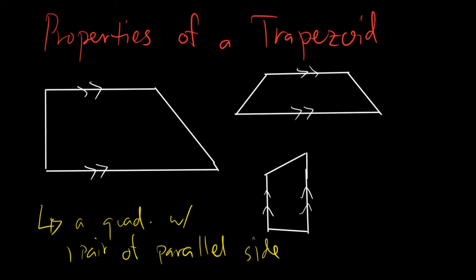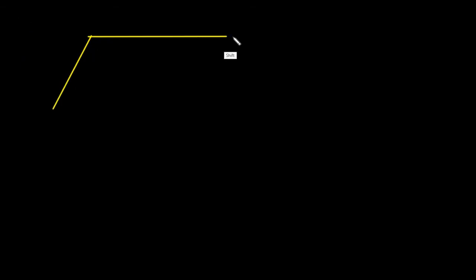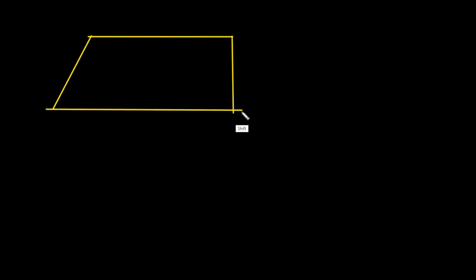Let me just scroll down a little bit. Now we will be discussing the different parts of a trapezoid before we proceed to the actual properties. In a given trapezoid, the parts would be, firstly, the bases.